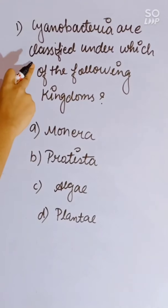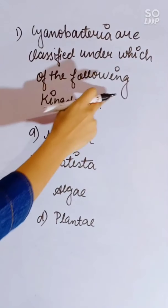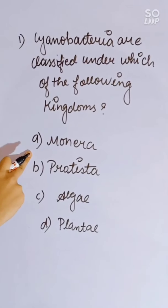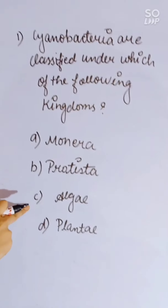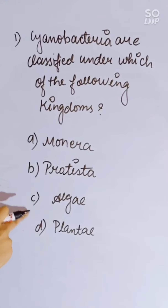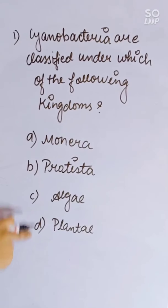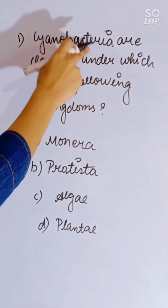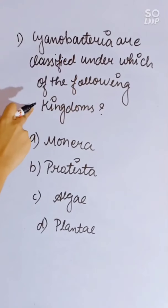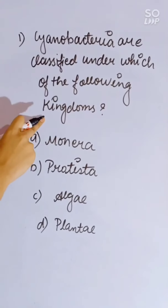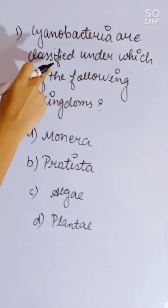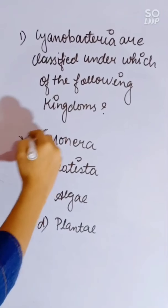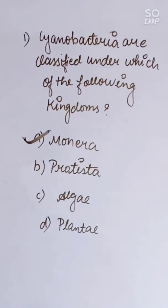Cyanobacteria are classified under which of the following kingdoms? Options: Monera, Protista, Algae, or Plantae. Cyanobacteria are classified under the kingdom Monera. Correct answer is Monera.